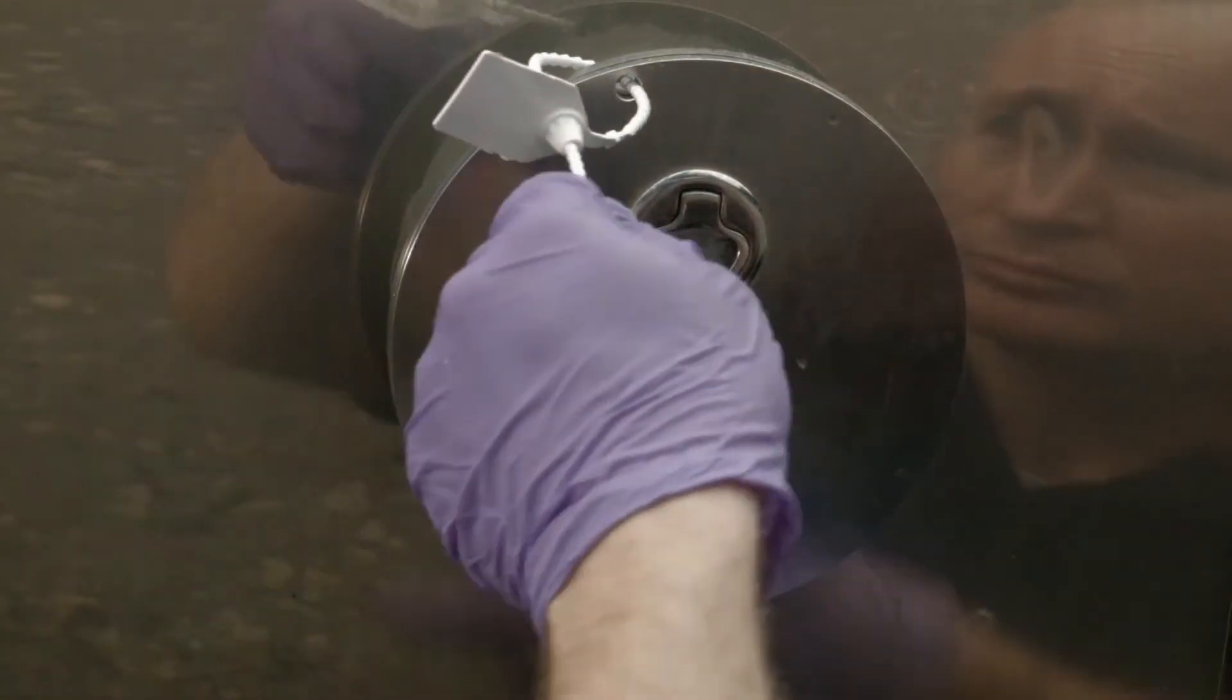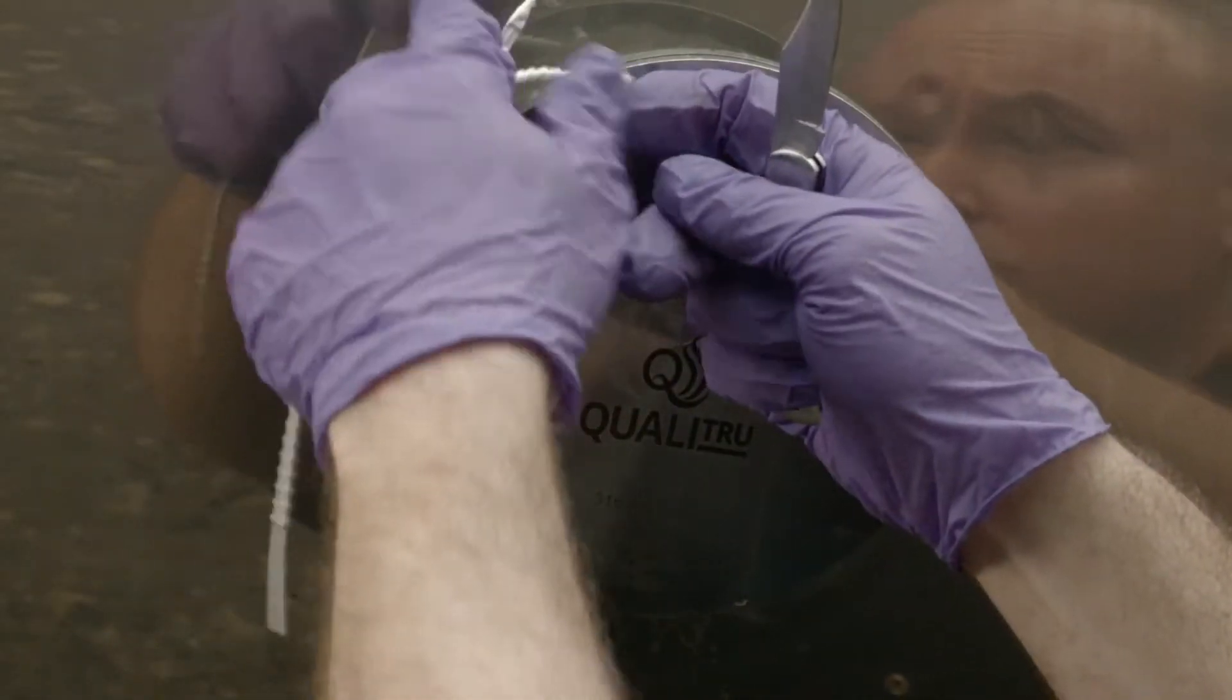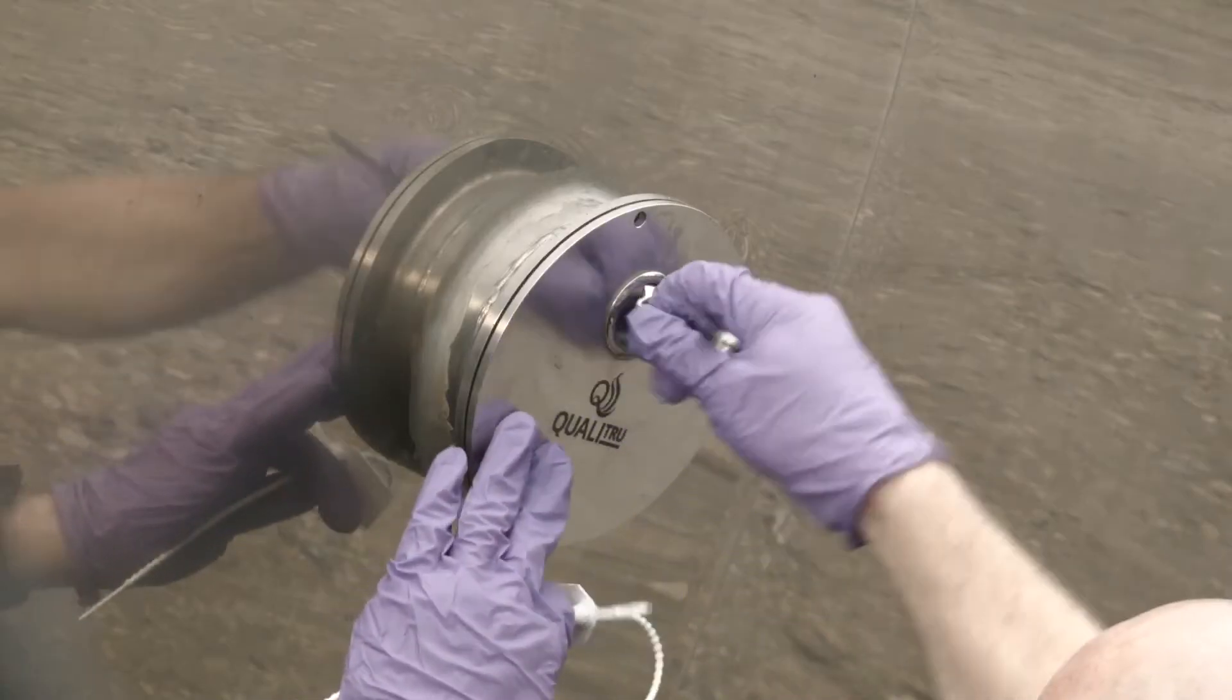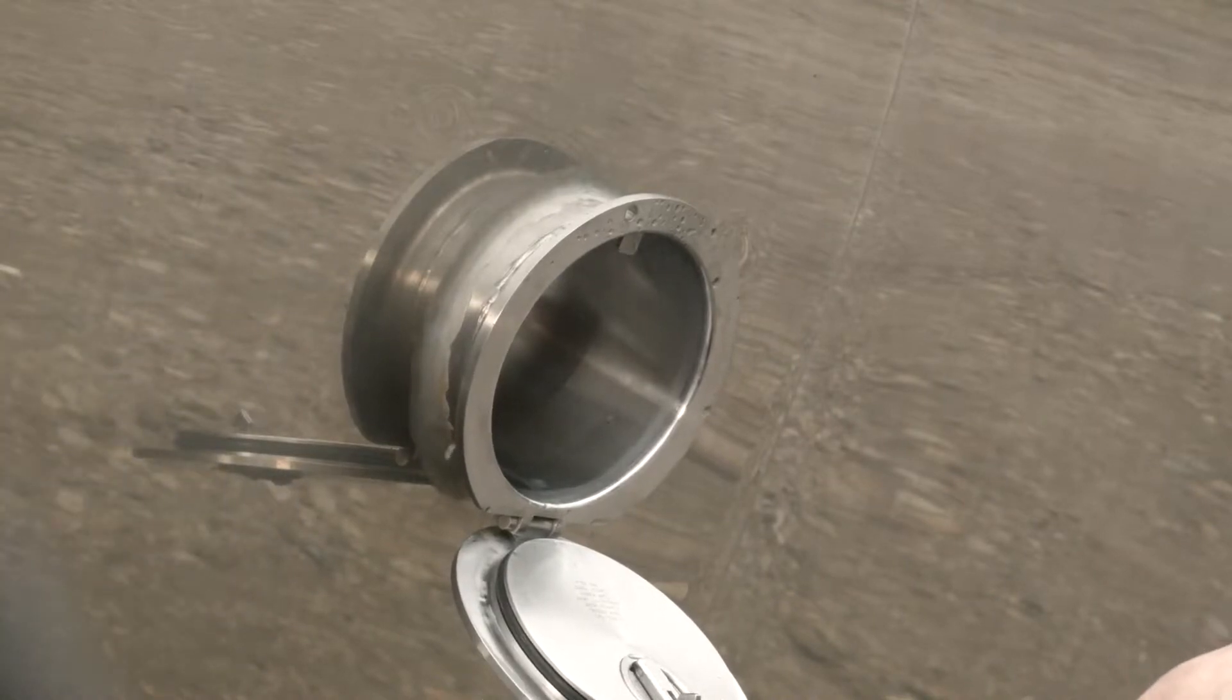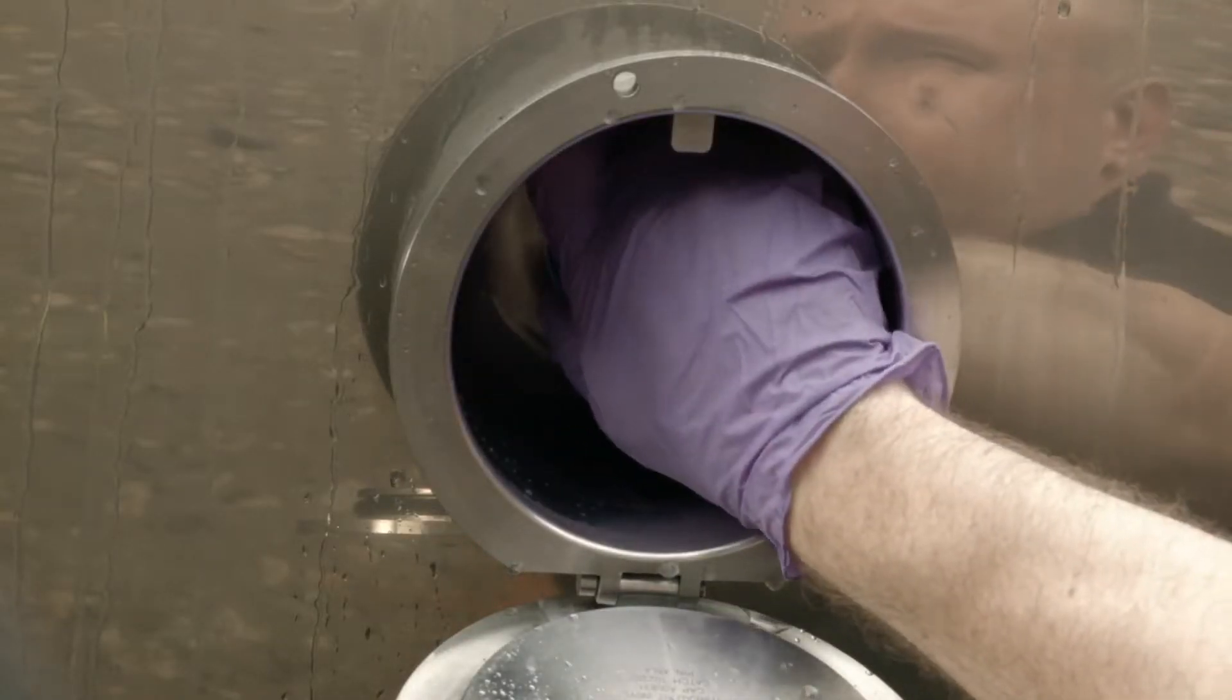Next, open the security lid on the QualiTrue Stainless Steel Sanitary Recessed Tanker Truck Port or access the QualiTrue fitting and remove the dust cover to gain access to the QualiTrue Sterile Septum.